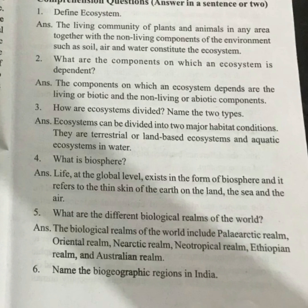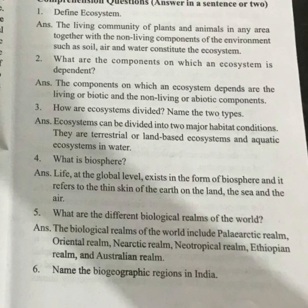What are the components on which an ecosystem is dependent? The components of the ecosystem include living or biotic and non-living or abiotic components. Ecosystems are divided into two types based on major habitat conditions: one is a terrestrial or land-based ecosystem, and the other is an aquatic or water-based ecosystem.